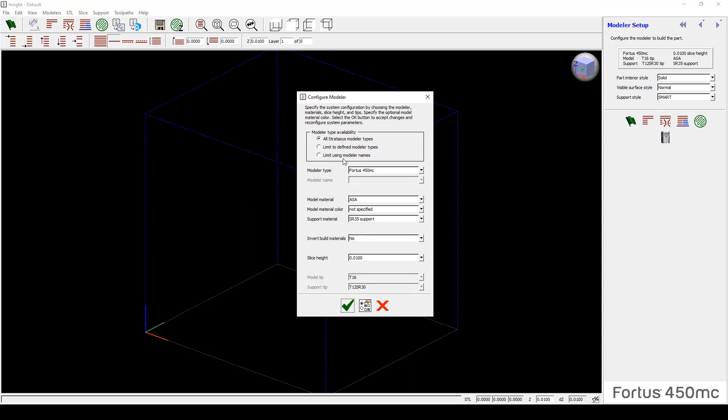By simply clicking on this Machine icon, you will open up a new window. From there, you can select the Modeler Type that pertains to your system. And then by doing so, you can see the model material that is available on that system. And in this case, again, we will stick with the ASA. We will select a support material combination. And then you can see the slice height. Now what it's doing here is saying, if you have chosen a slice height of 10 or say 7,000, it then says under a 7,000, you need a T12 tip and a T12 SR30 tip based on this combination.